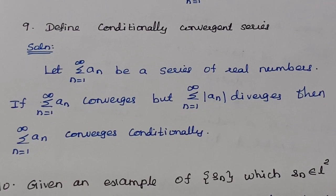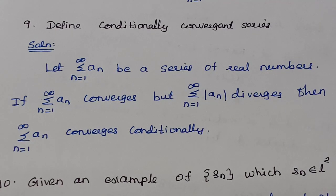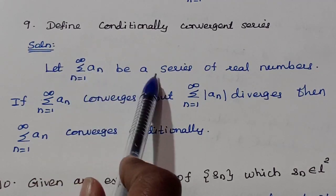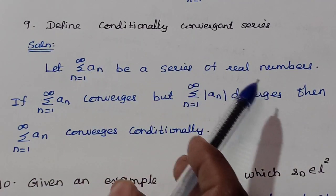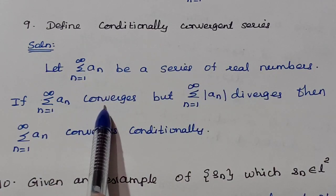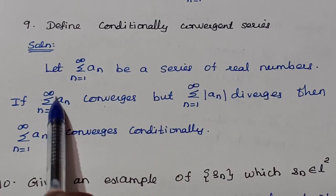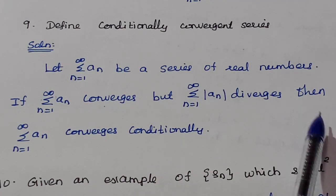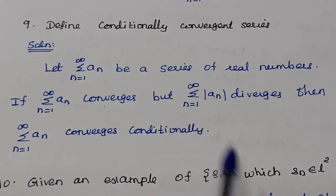Define conditionally convergent series. A series Σ aₙ is called conditionally convergent if the series Σ aₙ converges, but the series of absolute values Σ |aₙ| diverges.